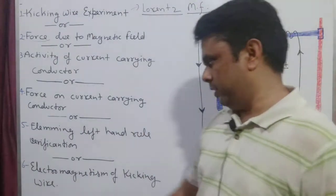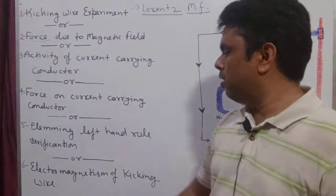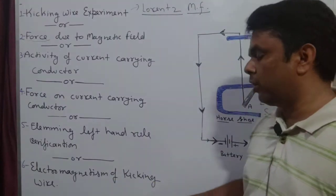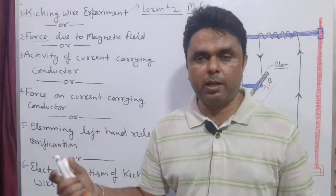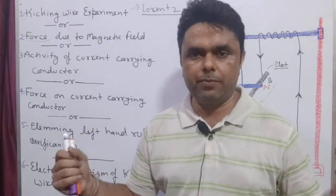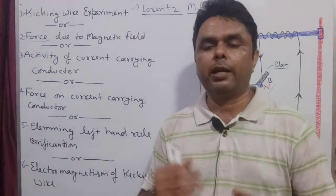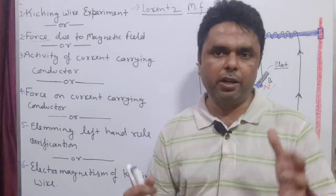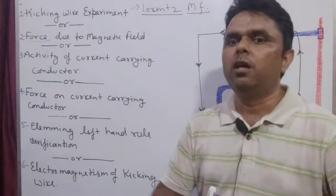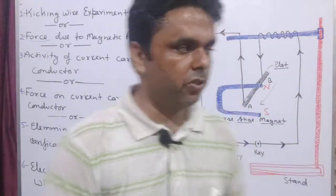The fifth kick came from Fleming's left hand. Now the sixth and final kick is: electromagnetism of the kicking wire — a very interesting phenomenon. Electromagnetism is a heavy-sounding name, but a very interesting application. How does electromagnetism relate to electromagnetic induction? Let's understand all of this today.